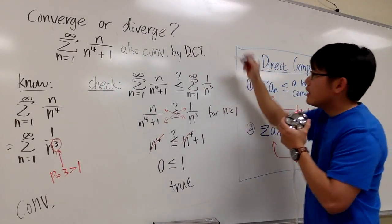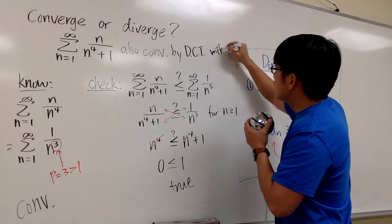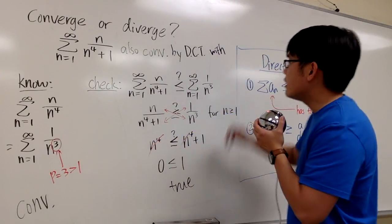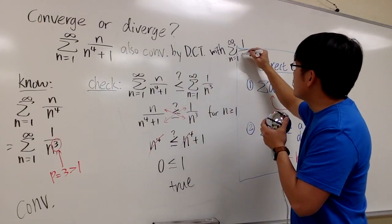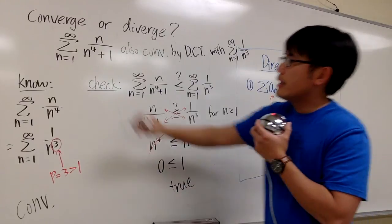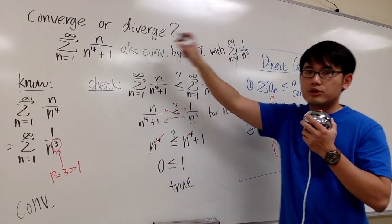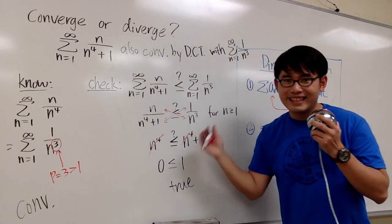And I'll also say with the known convergent that we have right over there: sigma where n goes from 1 to infinity, 1 over n to the third power. This is pretty much my response. That's the final conclusion. And that's it.